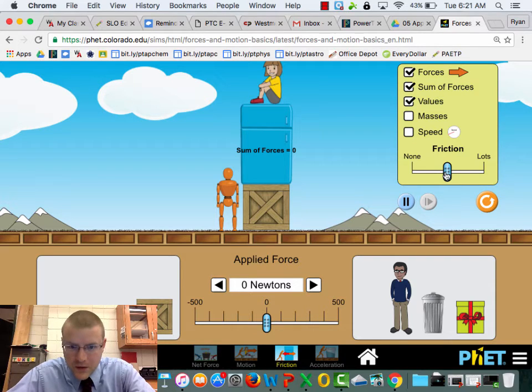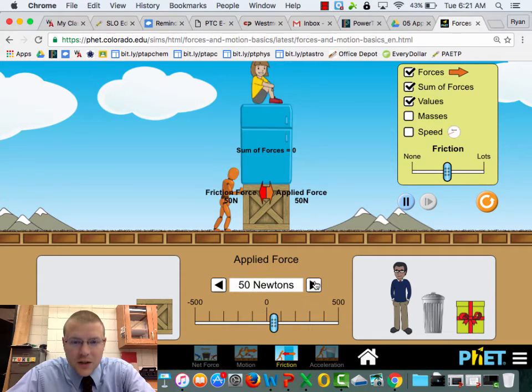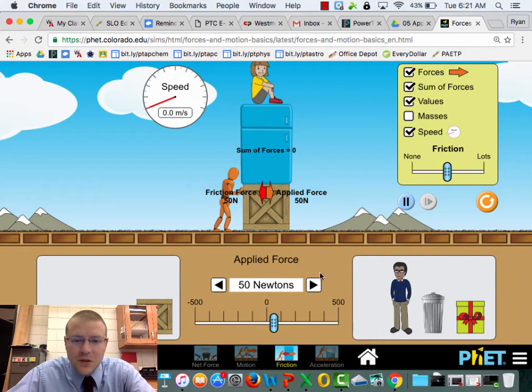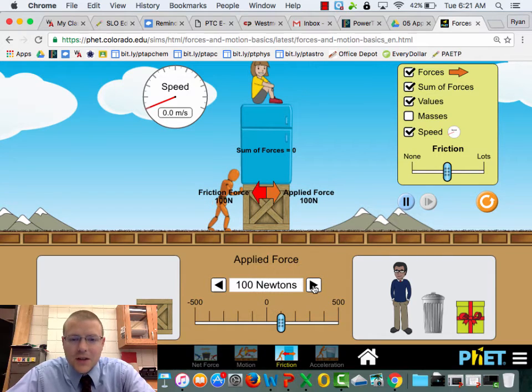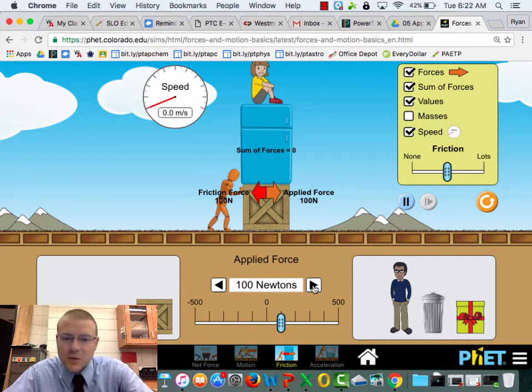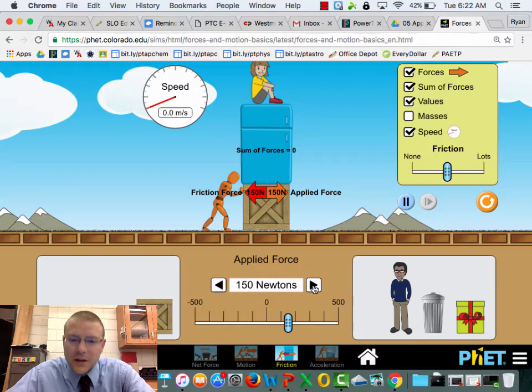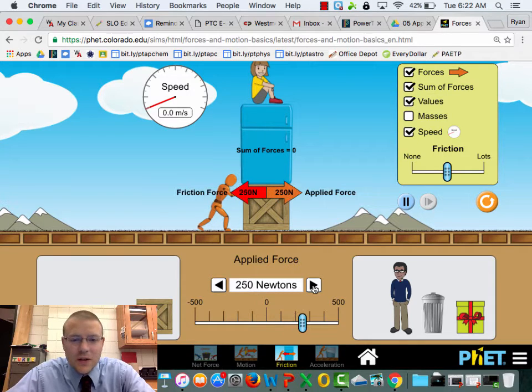We'll put this value on here and start applying a force. You can see that I'm pushing with 50 applied newtons of force and friction's responding back. These forces are balanced. The object is not moving. This speedometer is showing there's no velocity increase. Push up to 100 newtons. Same thing. Friction responds back. 150, 200, 250, 300.